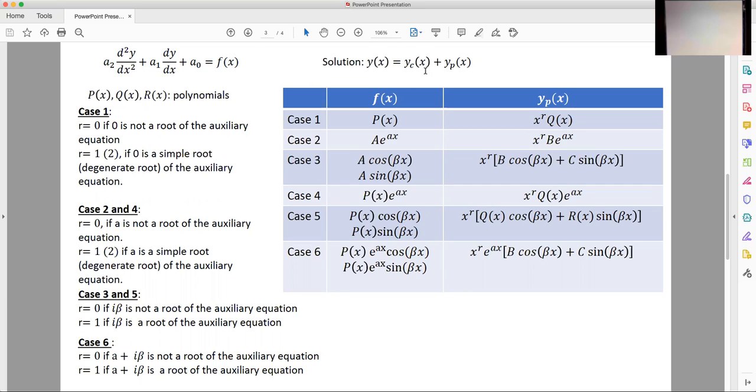The idea is similar to how we found the complementary solution. We're going to make an educated guess for the form of the solution given what type of function f of x is, and there have been tables assembled that summarize this information.